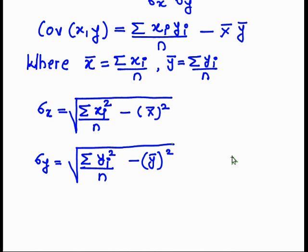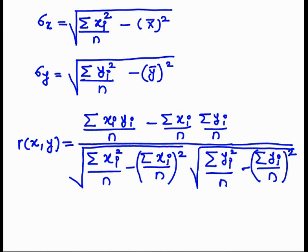The coefficient of correlation formula can also be written as: after substituting the values of covariance of x, y, sigma x, and sigma y, we get the coefficient of correlation equal to summation of xi times yi upon n, minus (summation of xi upon n)(summation of yi upon n), divided by the square root of [summation of xi squared upon n minus (summation of xi upon n) squared] times the square root of [summation of yi squared upon n minus (summation of yi upon n) squared].